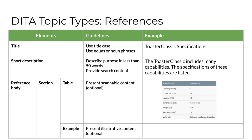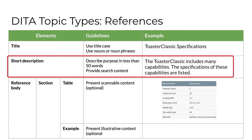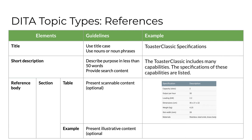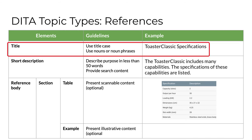The third basic topic type is a reference. Jorcik says reference topics provide specification information that supports conceptual information and task completion. These topics provide detailed, quickly accessed data, most often in tables. In DITA, all reference topics have a title, a short description, and a reference body made up of one or more sections, which might include a table, an example, or both. The guidelines for creating a short description are the same for all topic types: describe the purpose in less than 50 words and provide search content. The title for a reference uses nouns or noun phrases — for example, 'Toaster Classic Specifications.'